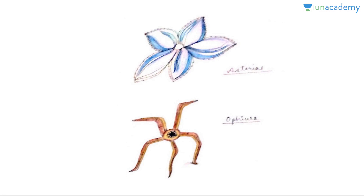The NCERT diagram shows Asterias, which is the starfish, and Ophiura, which is the brittle star. That's it for this lesson — stay tuned and keep watching. Bye bye.